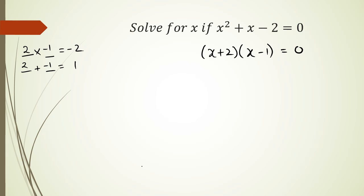Now once I get to this stage I know that when I multiply two numbers and if the answer is 0, one of the numbers has to be 0. So either this green part equals 0 or the red part equals 0. So I can write that up. I can say x plus 2 equals 0 or x minus 1 equals 0.